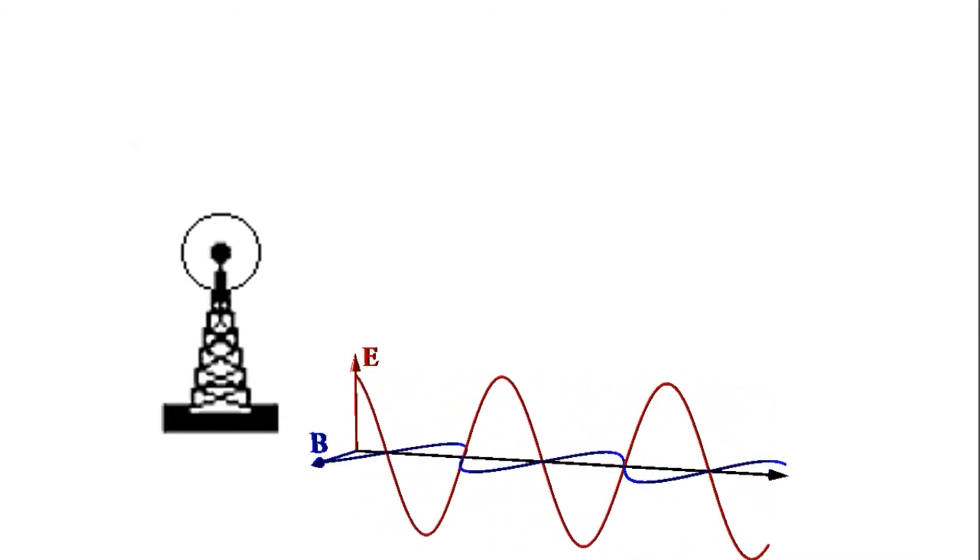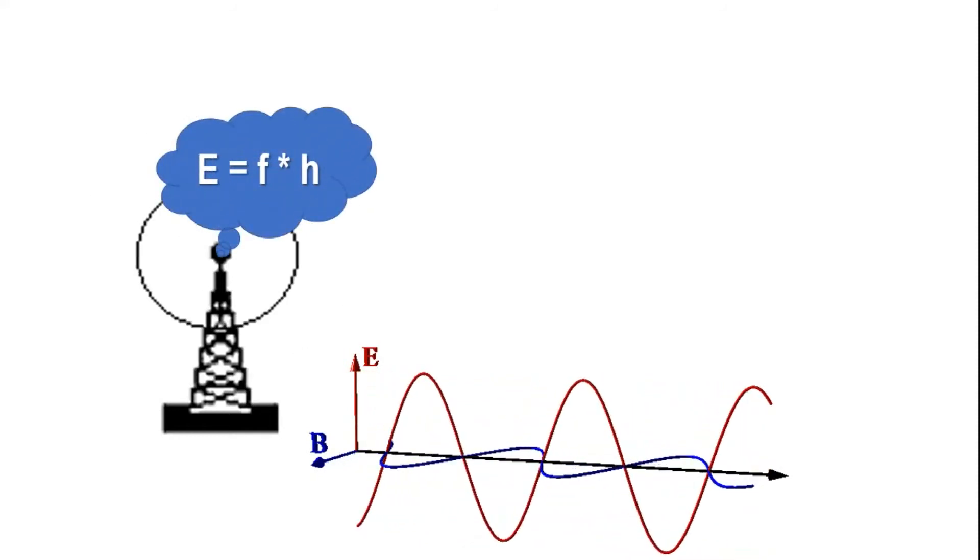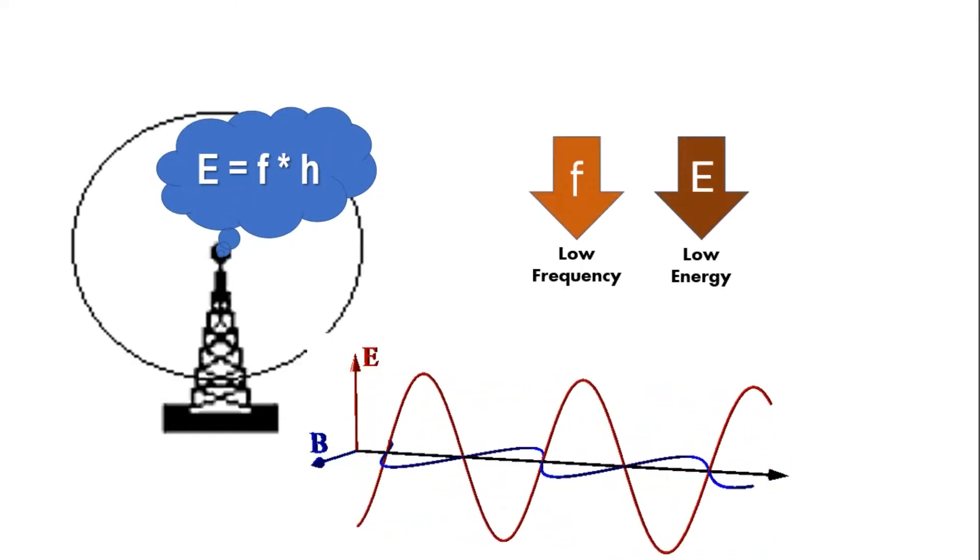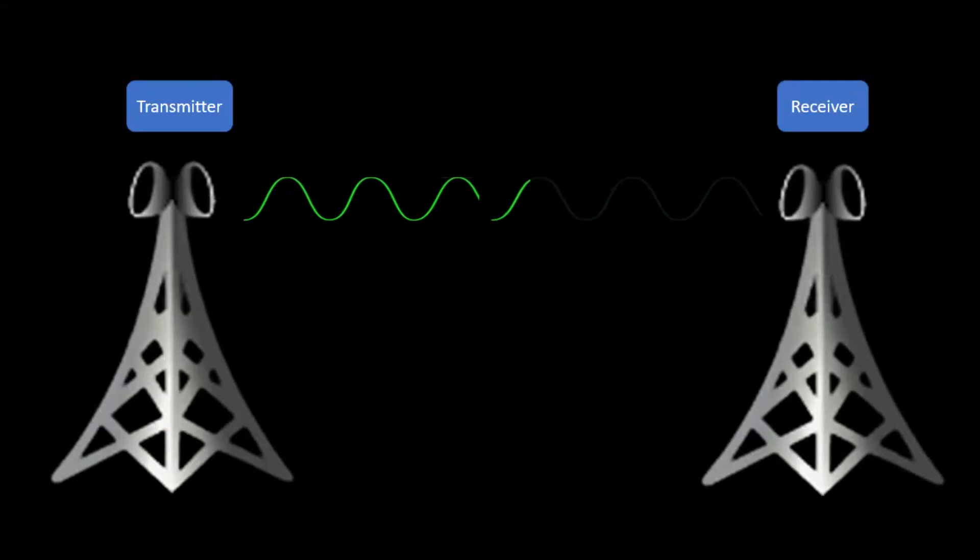Now the equation which represents the energy of the electromagnetic wave is E equals to F into H. It is clear from this equation that the energy of a low frequency signal is also very low. So travelling across a long distance, signal will become very weak and poor reception happens at the receiver.